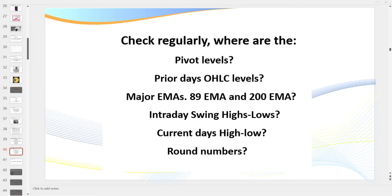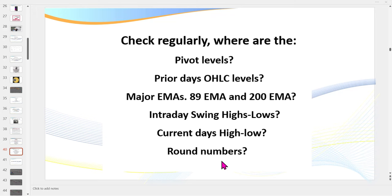You need to check regularly: where are the pivot levels? Where are the prior day's open, high, low, and close? Where are your major EMAs — particularly your 89 and 200 EMAs on any time frame — because they tend to act as major support and resistance levels, but also as price magnets. Check your intraday swing highs and lows and the current day's high and low. On oil — the Texas T — you've really got to watch your round numbers: $81, $80, $79 a barrel, and also the 20, 50, and 80 cent levels.